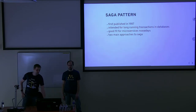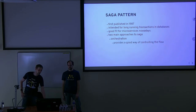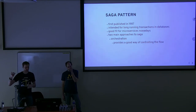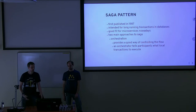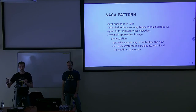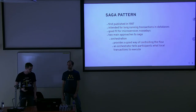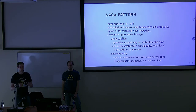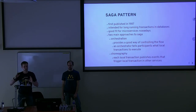There are two main approaches to Saga. One is called orchestration, which provides a good way of controlling the flow — which services are called, how rollback is handled — and requires an orchestrator, a single node that tells all others which local transactions to execute. The other approach is choreography, where there is no central coordinator and all the services call each other, passing state among themselves.